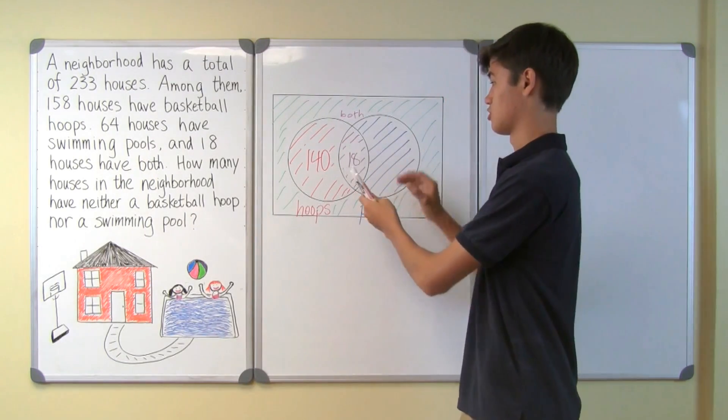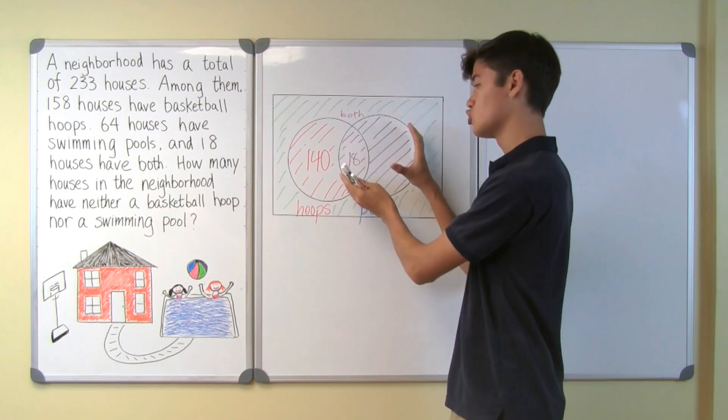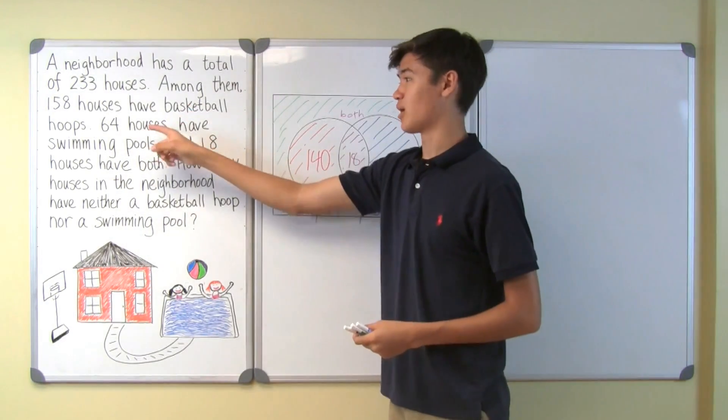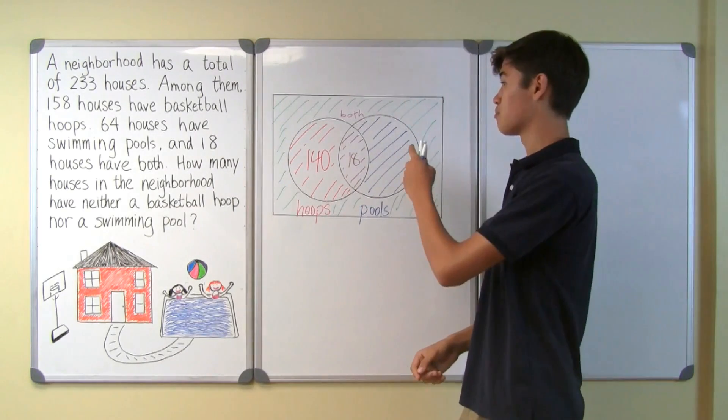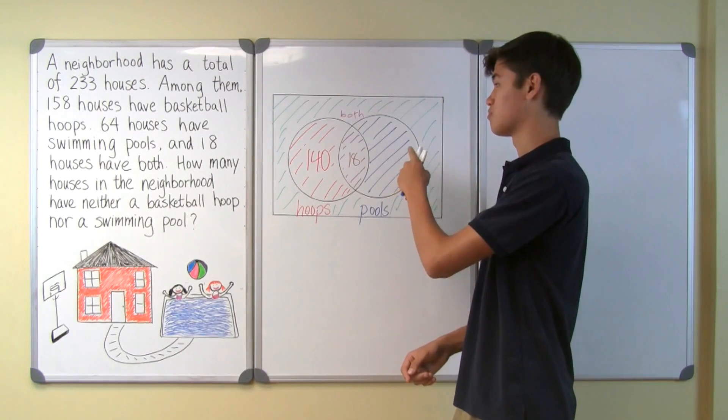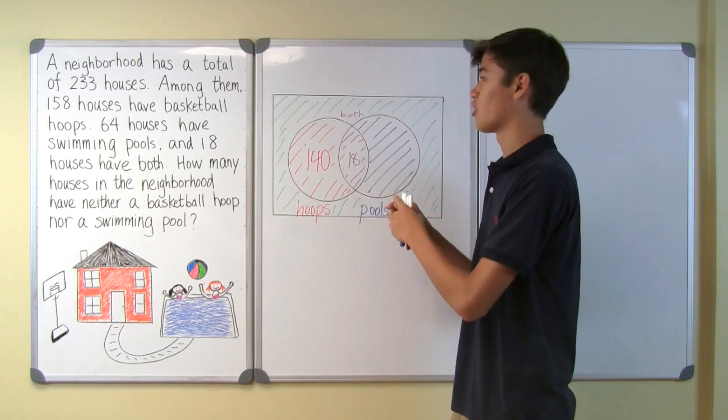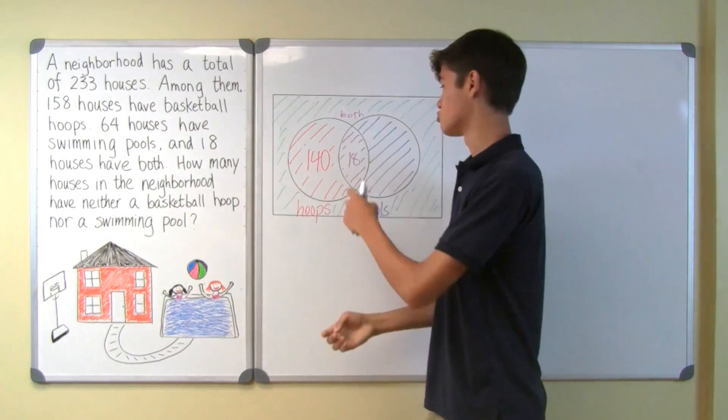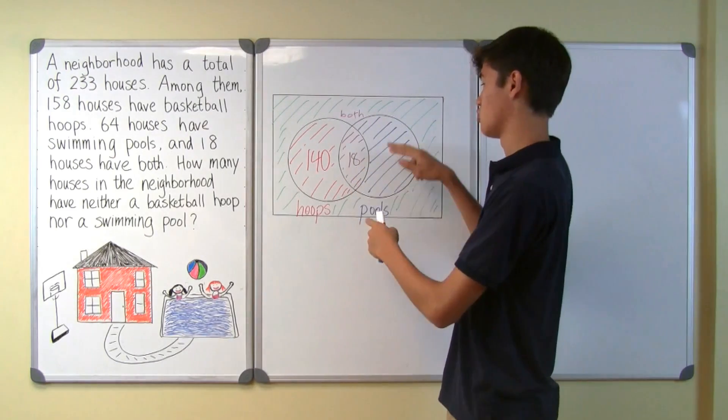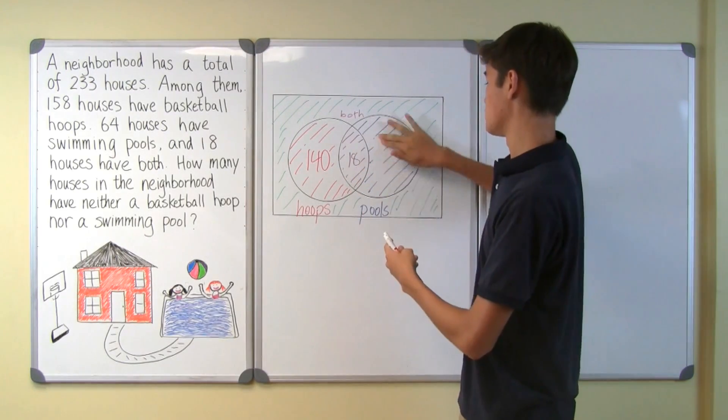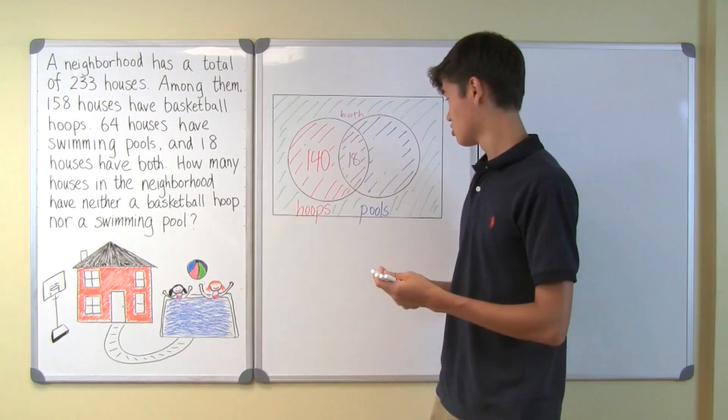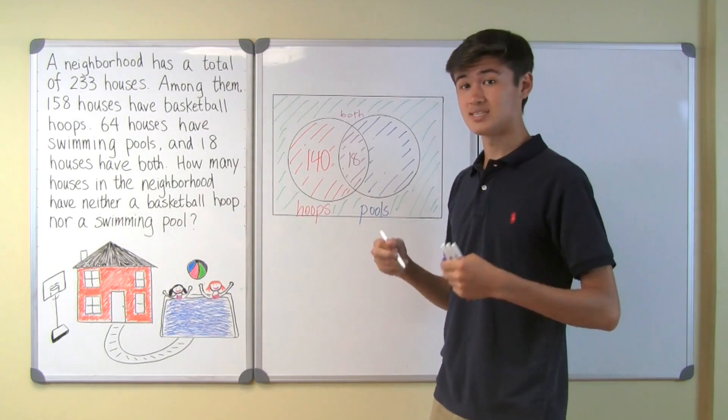Now let's go to the swimming pool circle. So this is the blue and purple circle, and it represents 64 houses. Because we don't know how many are in the blue section, we can solve for it by taking the whole purple and blue circle and subtract it by the purple section, which is 18. So we simply do 64 minus 18, which is equal to 46.